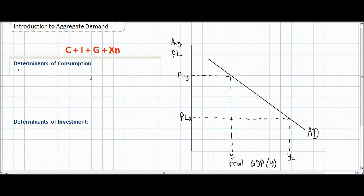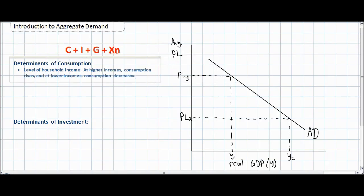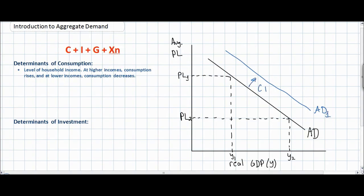First let's talk about household consumption, which refers to the spending by domestic households on goods and services. The first factor that can lead to a change is the level of household income. If household incomes rise due to an increase in the wage rate or an increase in the demand for labor, household income will increase and therefore consumption will increase, leading to a shift in the aggregate demand curve to the right to AD1.